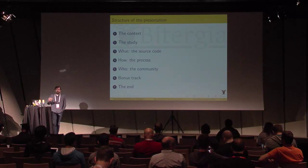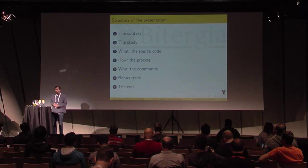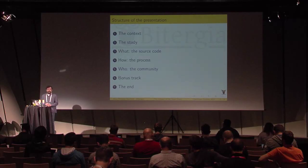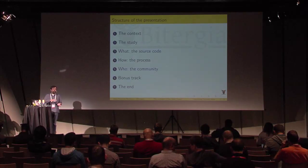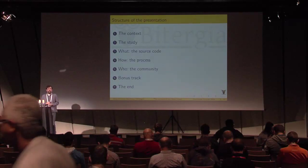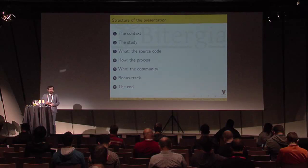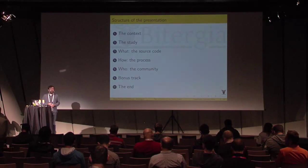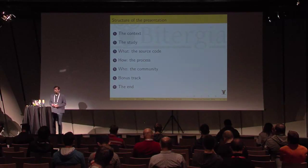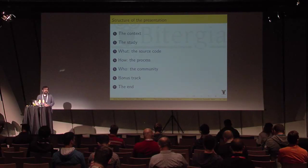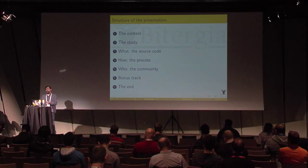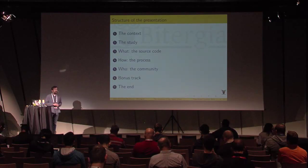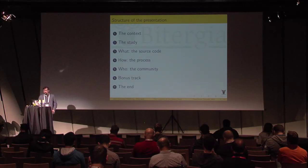This is the plan for what I'm going to talk about. First, I'll provide a bit of context about myself and the study itself. Then I'm going to talk about three main aspects of each of the four open cloud systems: the source code — what they are producing; the process — how they are producing it; and the community — who is producing those systems. Since this is the OpenStack summit, I'll include some extra information on OpenStack, plus the usual conclusions at the end.